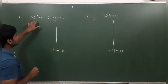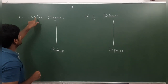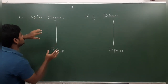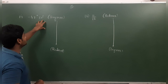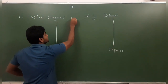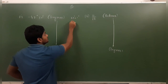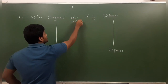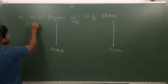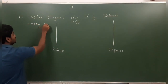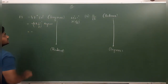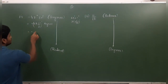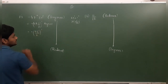First example: minus 47 degrees 30 minutes. We need to convert the minutes into degrees first. Since 60 minutes equals 1 degree, 30 minutes equals half a degree. So minus 47 degrees 30 minutes becomes minus 47 and a half degrees, which we write as minus 95 by 2 degrees.